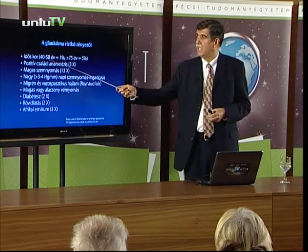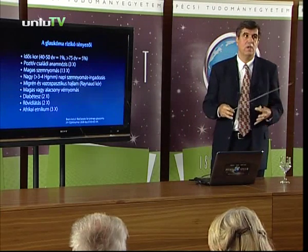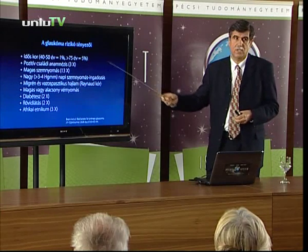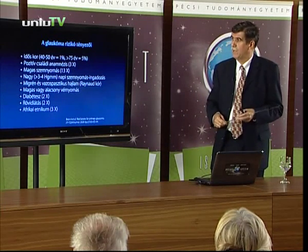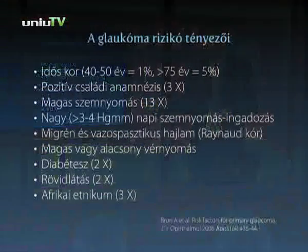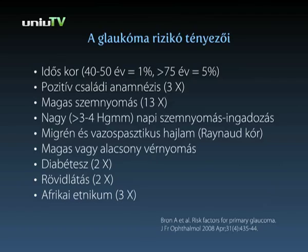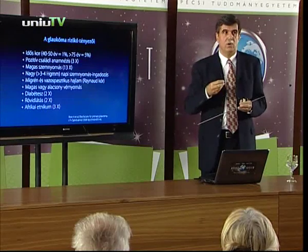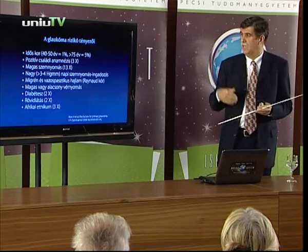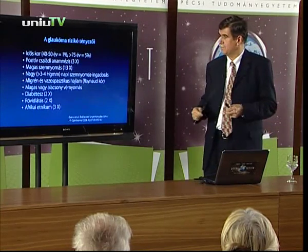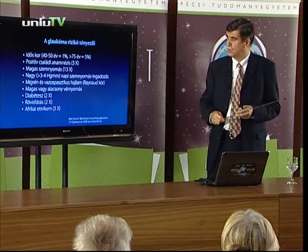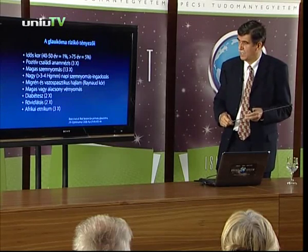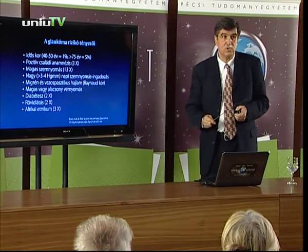Rizikótényező az életkor: 40-50 éves korcsoportban mindössze 1%-ban fordul elő, 70 év fölötti korcsoportban már 5%-ban. Pozitív családi anamnézis háromszoros rizikót jelent. Ha magas szemnyomást is mérünk, 13-szoros a rizikó. Nagyon fontos a napi szemnyomás-ingadozás. A migrén és a vazospasztikus hajlam fokozott rizikó – a Raynaud-kór elég gyakori elváltozás, amikor nagy hidegben az ember kézujjai ellilulnak, elfehérednek. Magas vagy alacsony vérnyomás szintén rizikótényező. Cukorbetegség kétszeres, rövidlátás szintén kétszeres, és az afrikai etnikum háromszoros rizikótényezőt jelent.